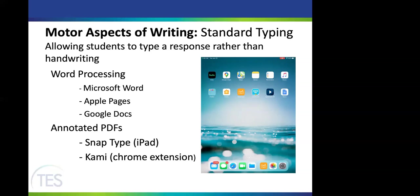A really cool tool is the annotated PDF, where you take a picture or scan a document. This is super helpful with worksheets — think of a social studies worksheet with fill-in-the-blank boxes. If the student couldn't handwrite, you could use Snap Type on iPad, which lets you take a picture of the worksheet, or Kami, a Chrome extension where you scan it in. The student then types in those same boxes, producing work that looks the same as their peers, and they can share it or print it.